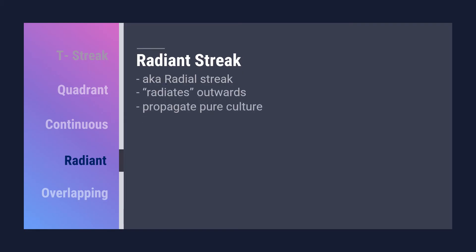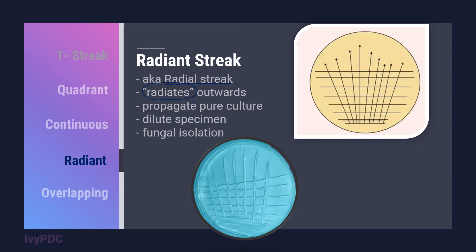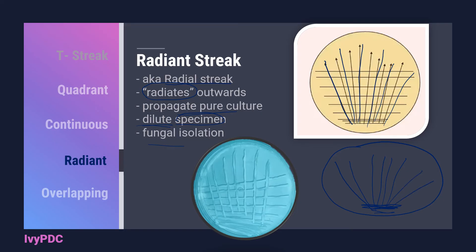Next is the radiant streak, also known as the radial streak, because the inoculating pattern radiates outwards towards the outer edge of the plate. This radiant streaking pattern is used to propagate pure culture or when the specimen is diluted. In some cases, other laboratories also use this streaking pattern for fungal isolation. To perform it, we spread a loopful of organisms in a small area at the edge of the agar, then using another sterilized loop, we spread seven to eight straight lines radiating to the outer edge. Then using another sterilized loop, we inoculate discontinuous or interrupted streaks perpendicular to the radiating streaks.